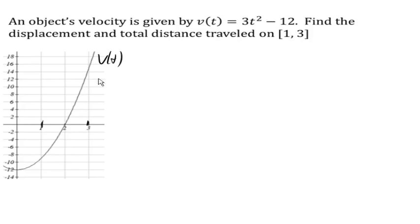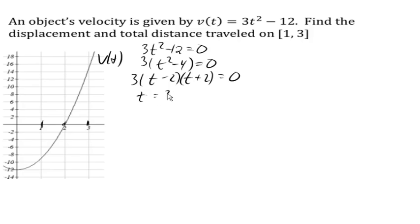We need to figure out where my velocity is zero. In this case, we can see it's at 2 from the graph. But to be sure, when will my velocity equal zero? We can factor: 3t² - 12 = 0, giving 3(t - 2)(t + 2) = 0. My velocity is zero at t = 2 and t = -2, with 2 being the one we're interested in.